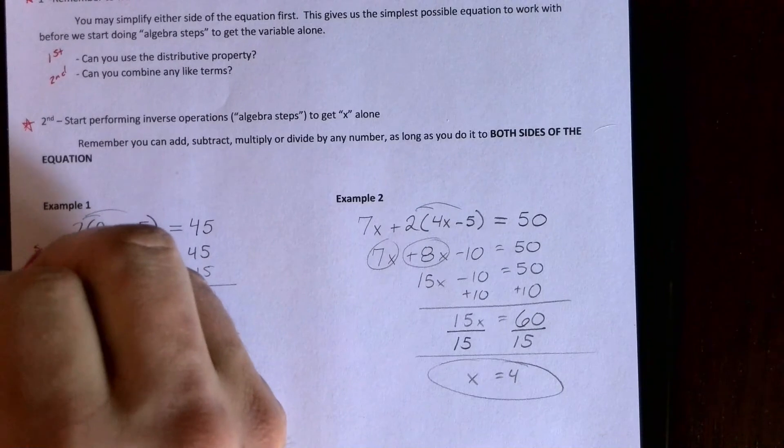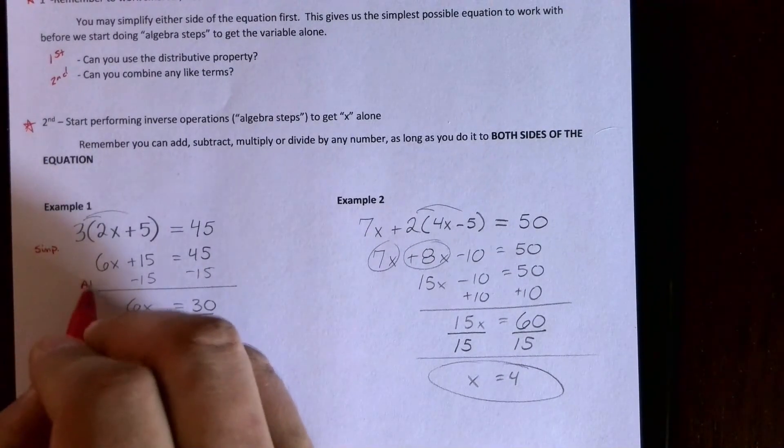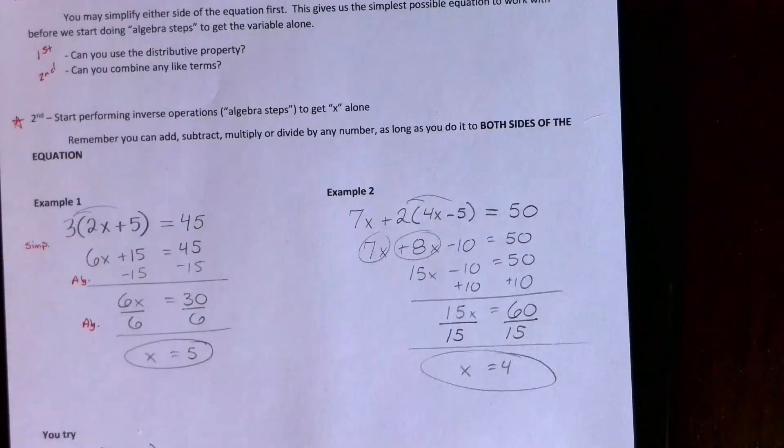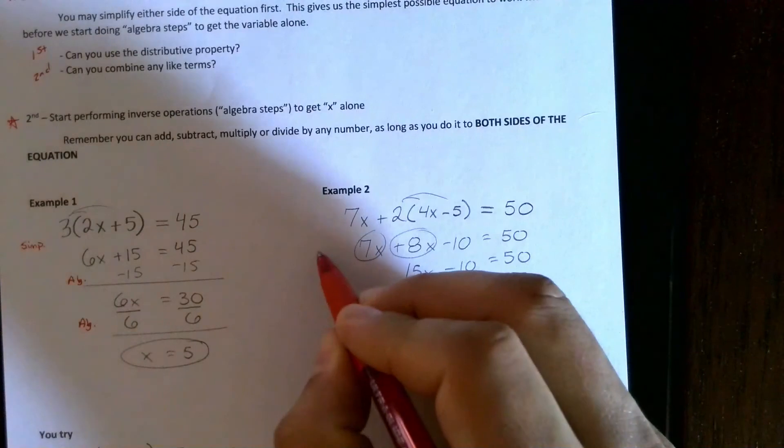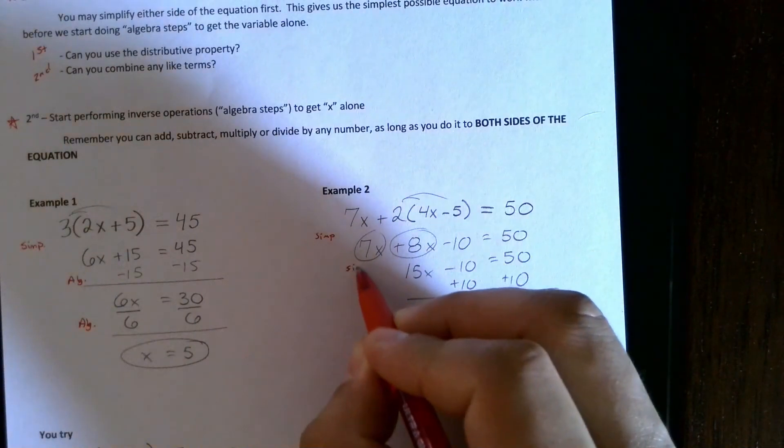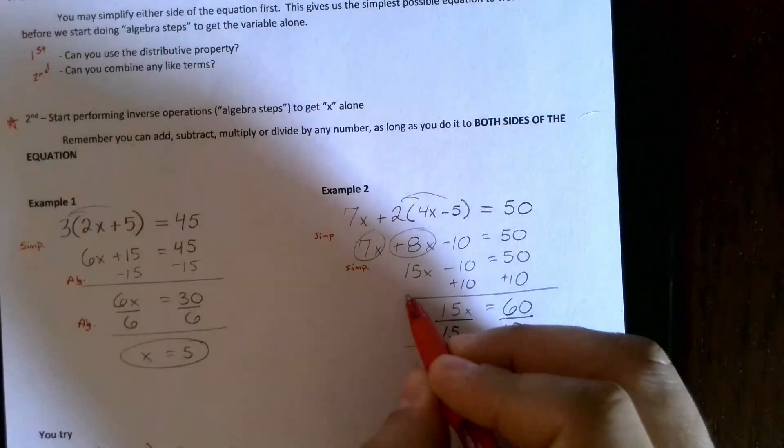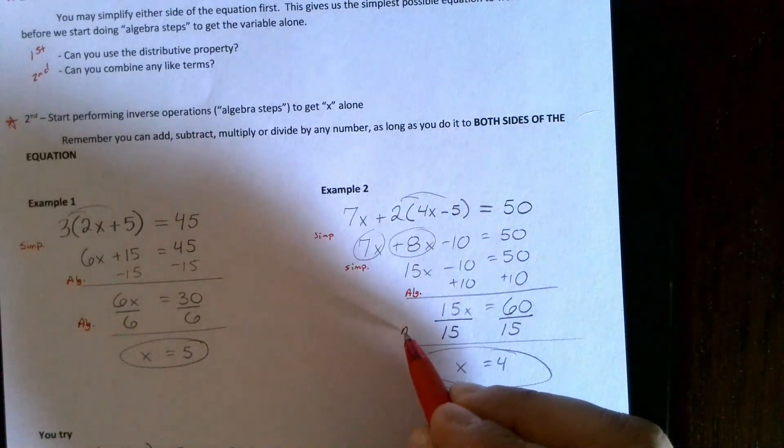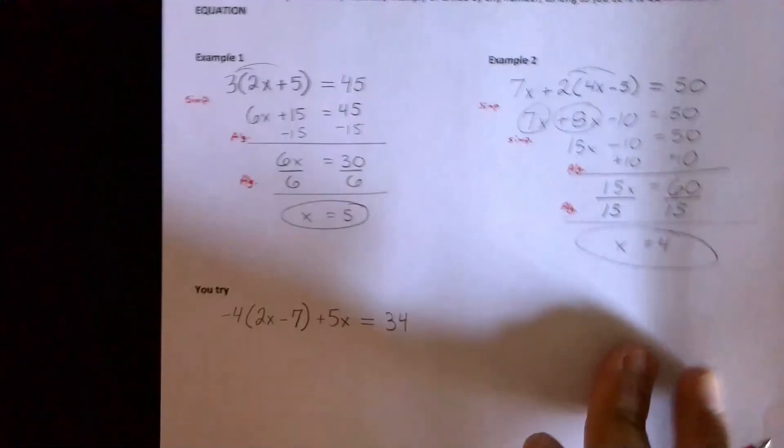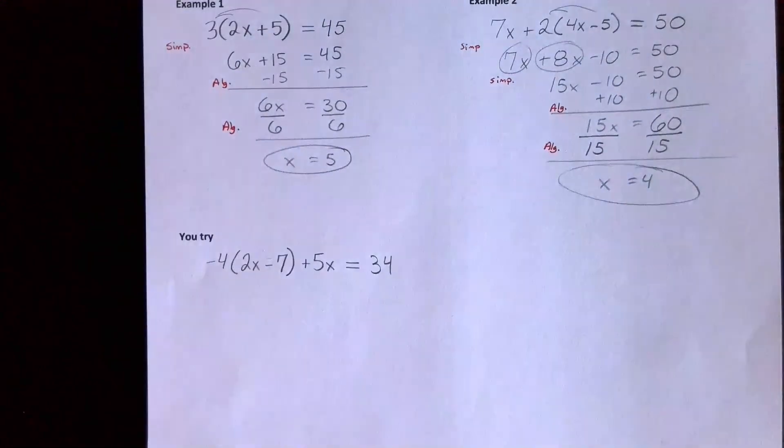So you got a couple different examples here. These have simplifying in them. First we did a simplifying step of distributive property, then we did an algebra step of minusing 15 both sides, and then an algebra step of dividing 6 both sides. That got us all the way down to x equals 5. Here we did a simplifying step of the distributive property, then we did a simplifying step of combining like terms, then an algebra step of adding 10 both sides and an algebra step of dividing 15 both sides. So again these are good examples that you can look at as you're doing the work on page three. All right, so pause the video, see if you can do the harder one. This one has distribute and combine like terms. Pause it and then I'll go over the answer.